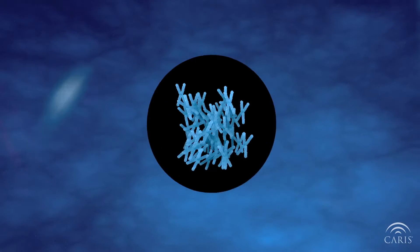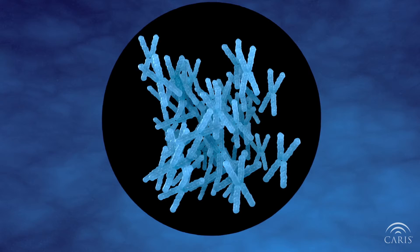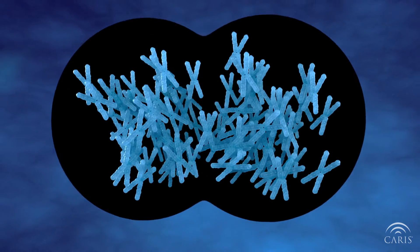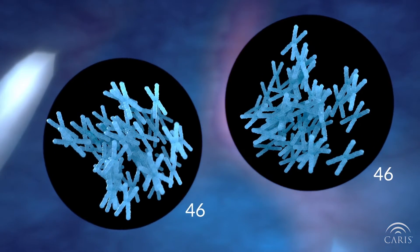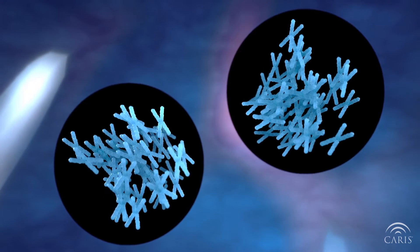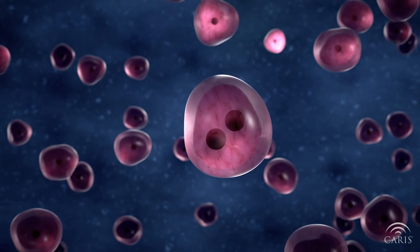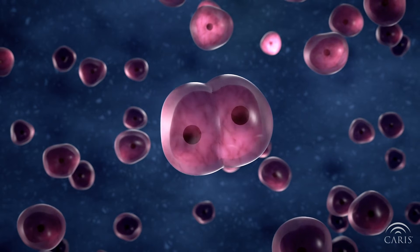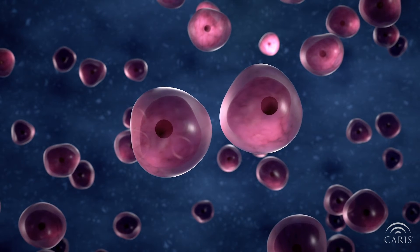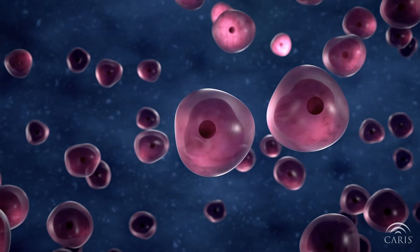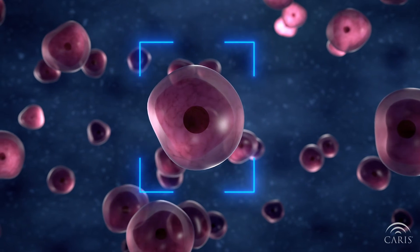When a cell divides, it first duplicates all 46 chromosomes so they can be split evenly into the two daughter cells that are created. Each daughter cell will receive two copies of every chromosome. This important process is normally regulated by a system of checkpoints throughout cell division.